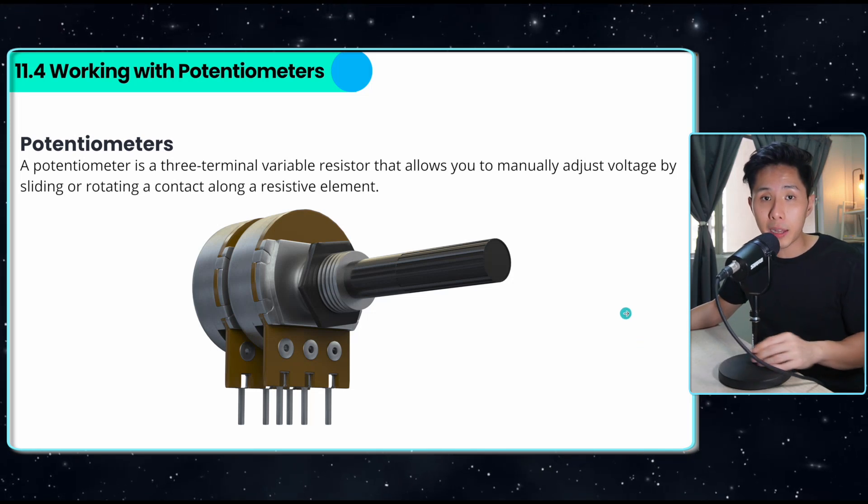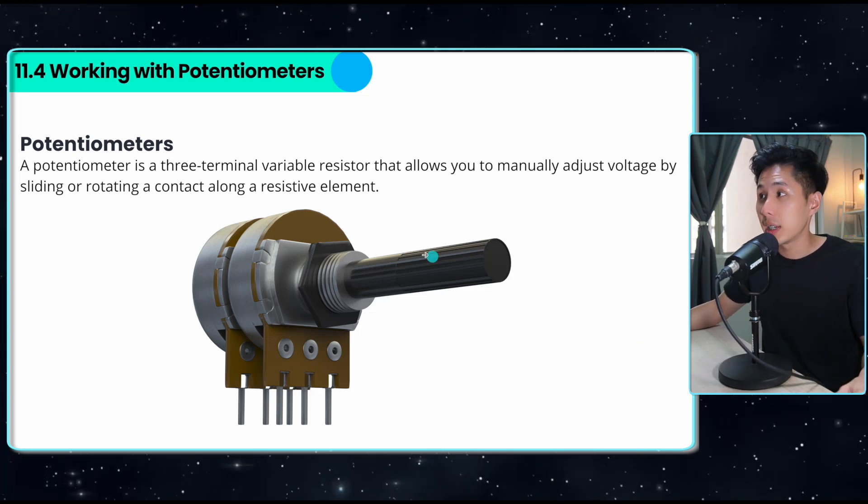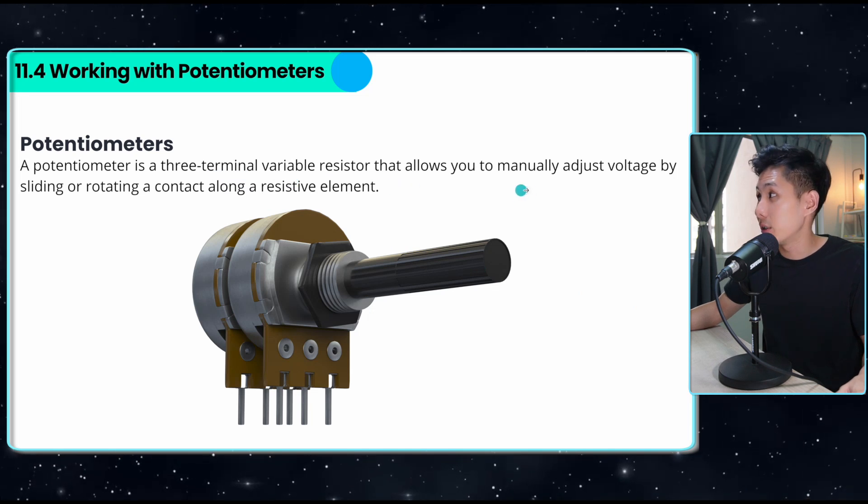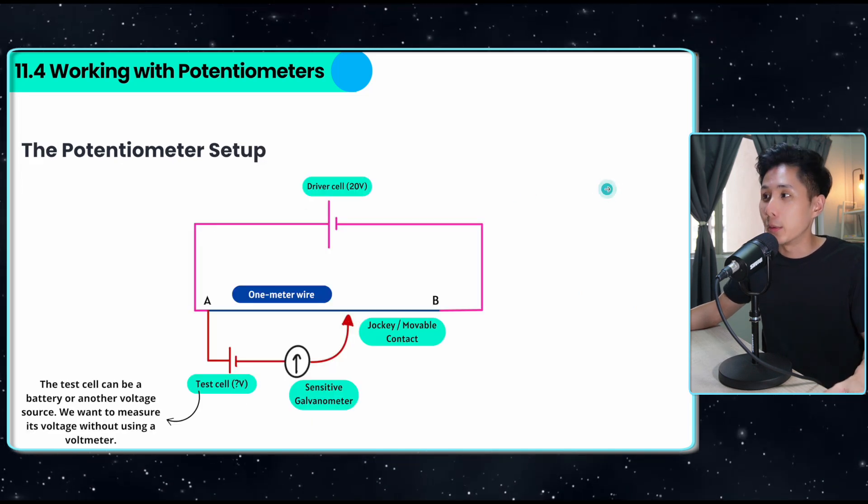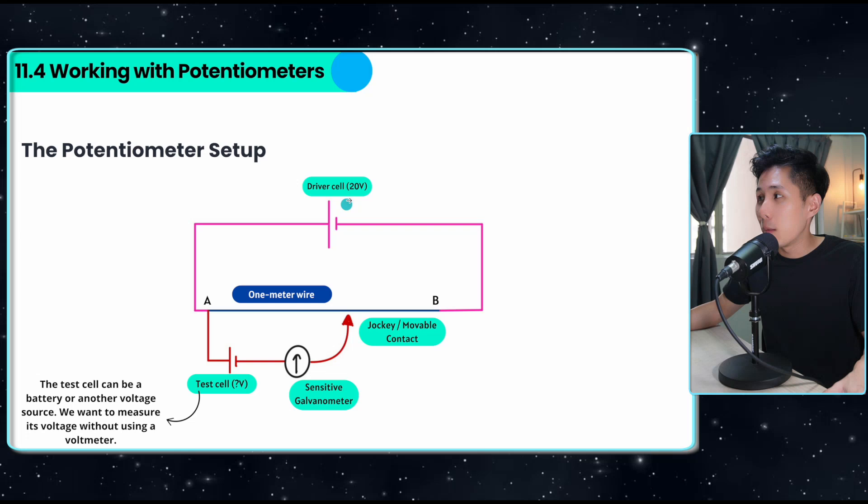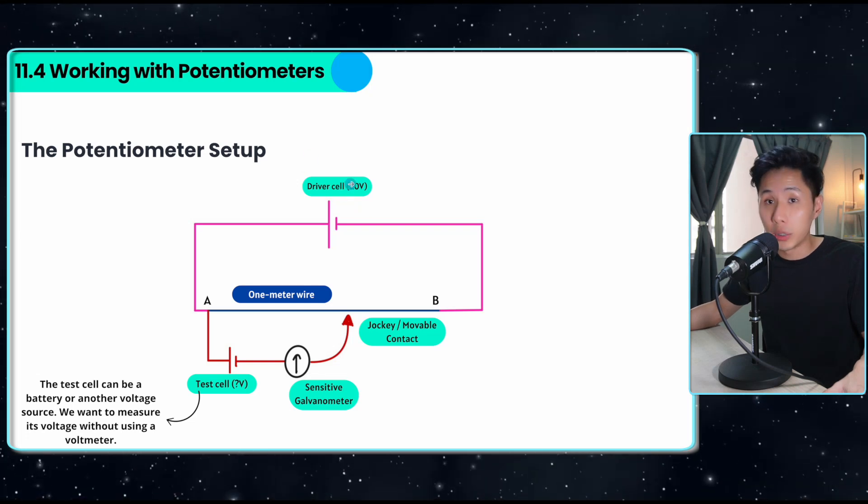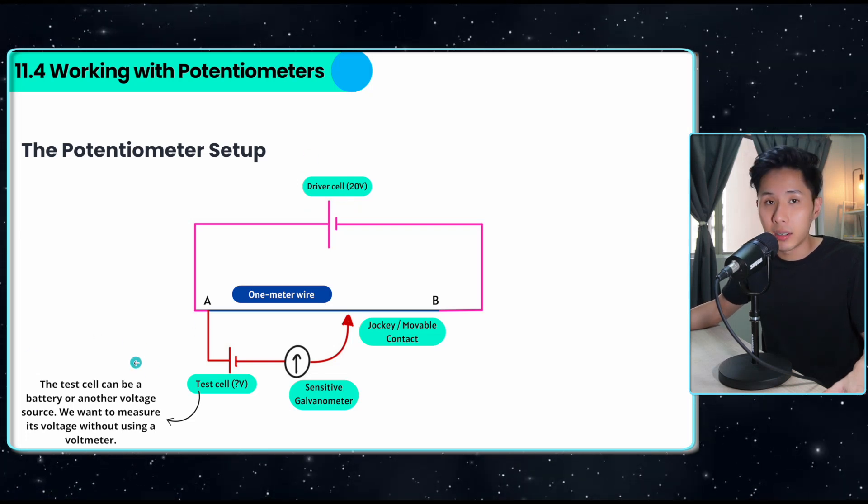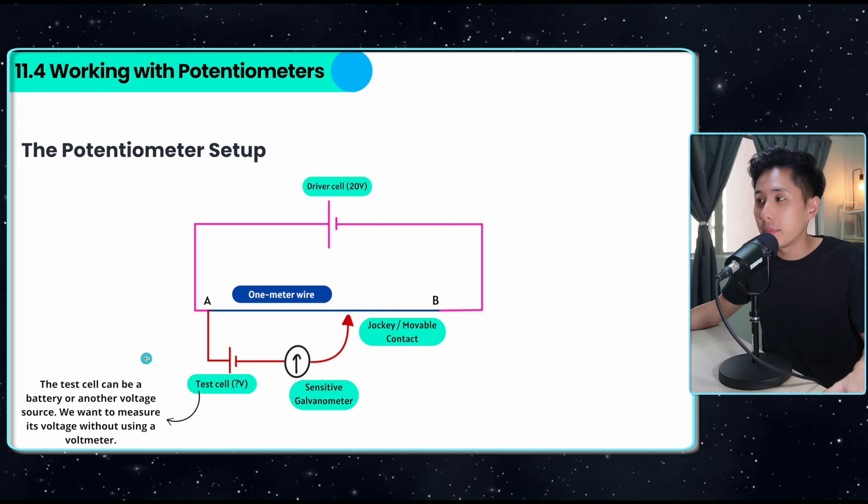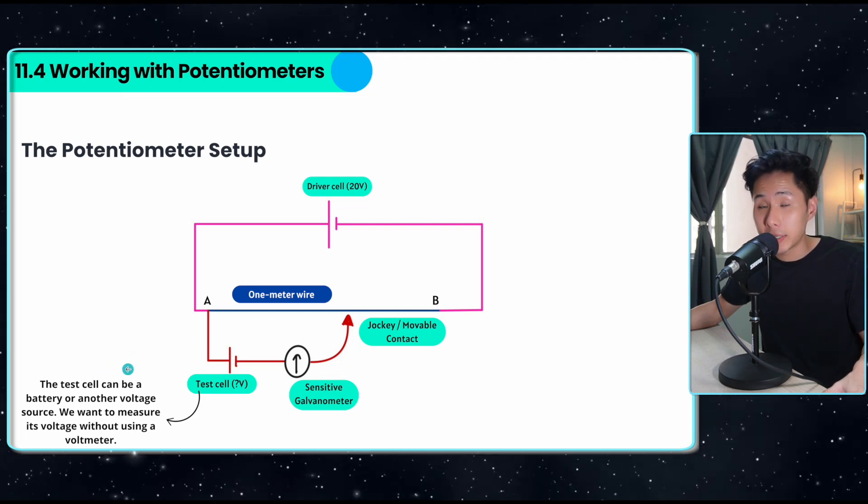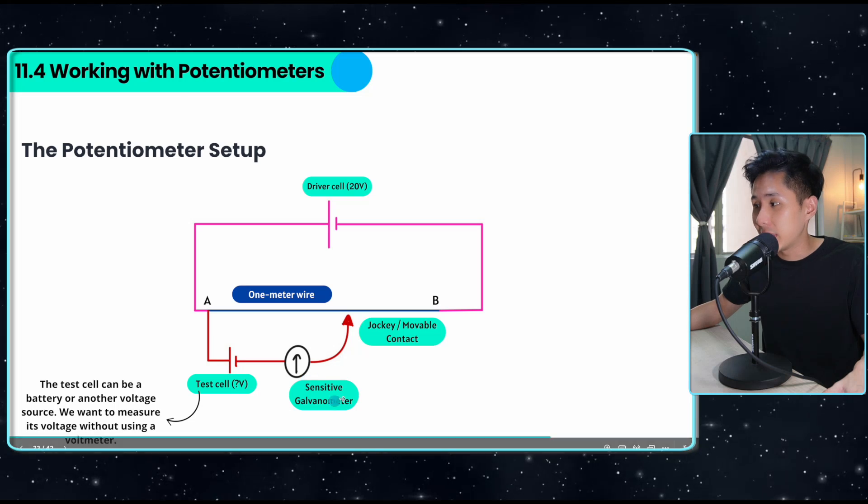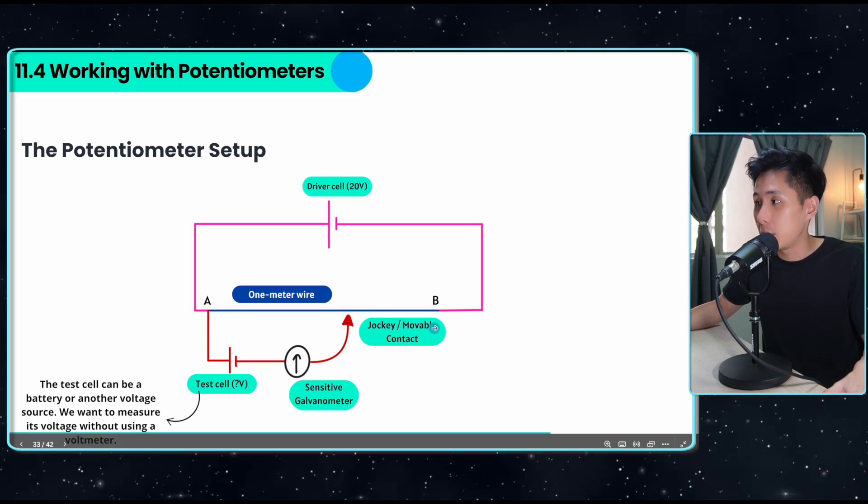Now let's look into the last part of the chapter called the potentiometer. It is a three-terminal variable resistor that allows you to manually adjust voltage. This is the potentiometer setup. We have a driver cell with a known voltage. We also have a test cell. What we try to do is measure the voltage of the test cell without a voltmeter.